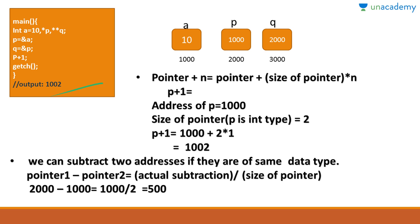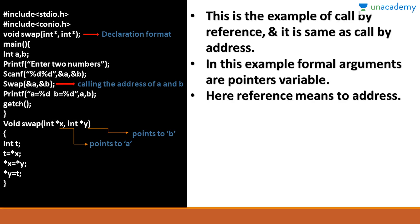We can subtract two addresses if they are of the same data type. If pointer1 − pointer2: actual subtraction (2000 − 1000 = 1000) is divided by the size of the pointer type. For int type, the size is 2 bytes.